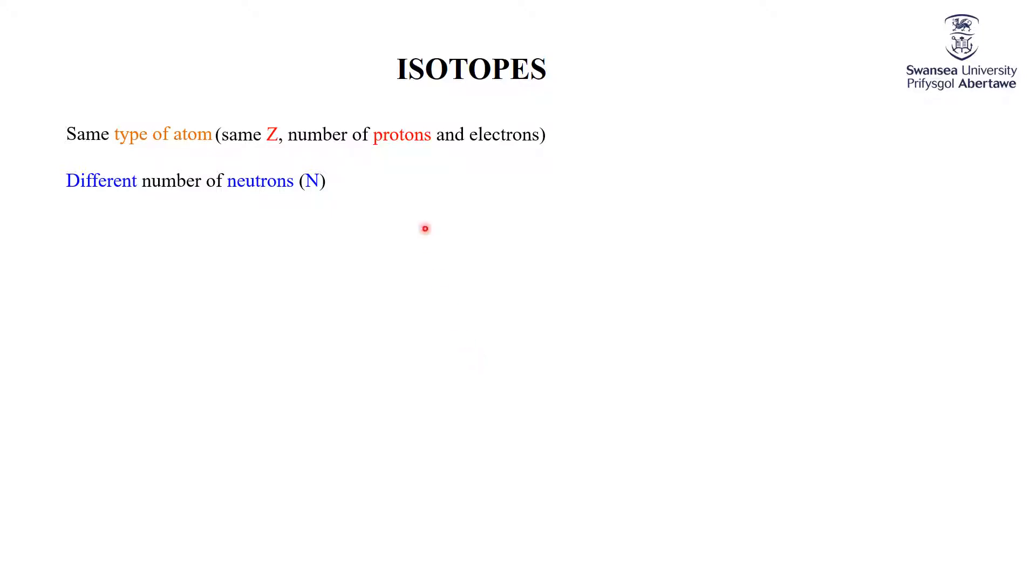But different so-called isotopes of that type of atom have different numbers of neutrons. And if they have the same number of protons, different numbers of neutrons, that must mean that they have a different mass.